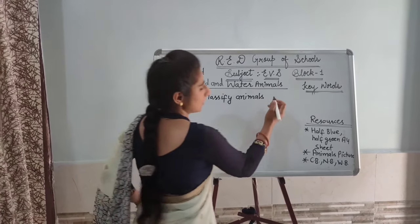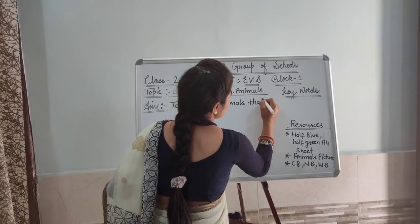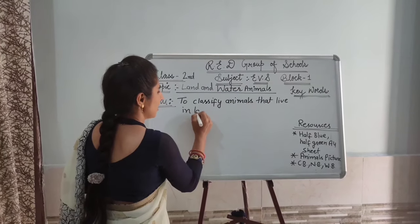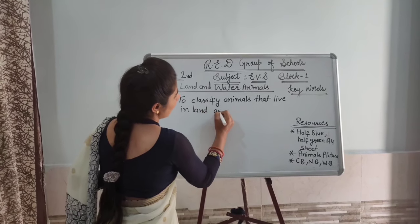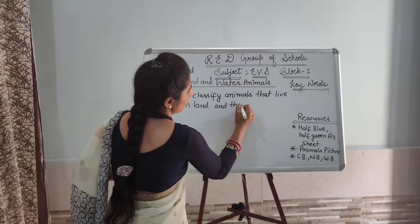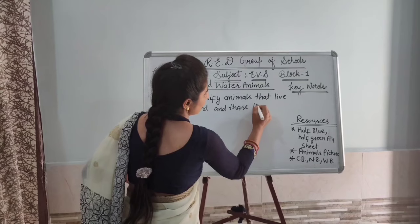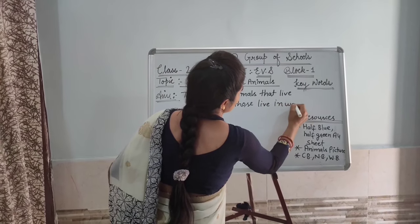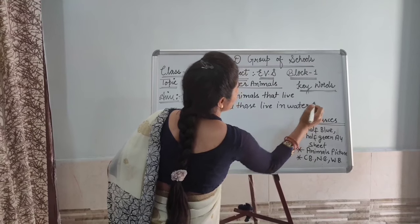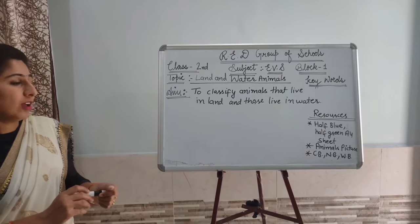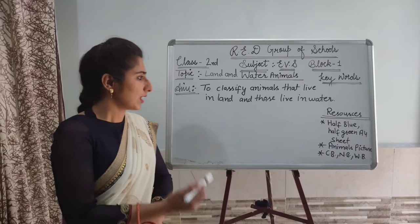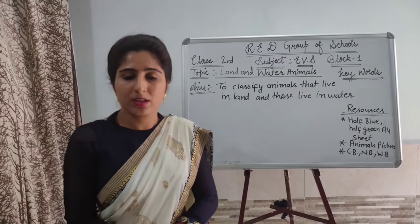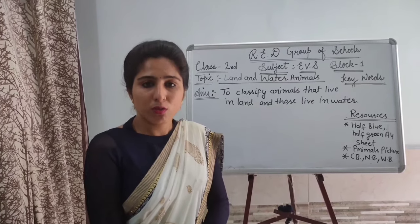We are going to classify animals that live on land and those that live in water. This is our aim today — we will classify those animals. Some animals live on land and some animals live in the water.